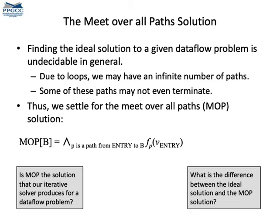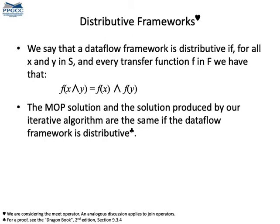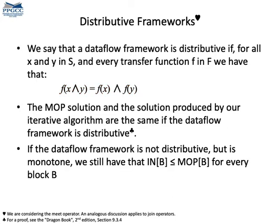I'm leaving two questions here. First, does our iterative solver compute the MOP? And second, what's the difference between the MOP and the ideal solution? The meet over all paths is not the solution we obtain from a constraint system using our iterative solver, except if the transfer functions are distributive. We say that a dataflow analysis is distributive if the transfer function of a meet equals the meet of the transfer functions. For analyses that have this property, the meet over all paths is really what we are computing. If the dataflow analysis is not distributive, then we are computing a solution that is less precise than the meet over all paths.